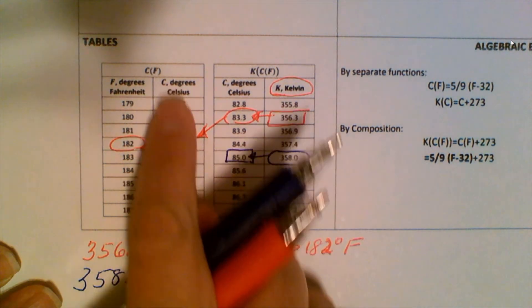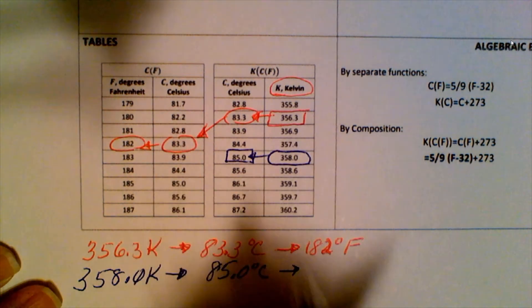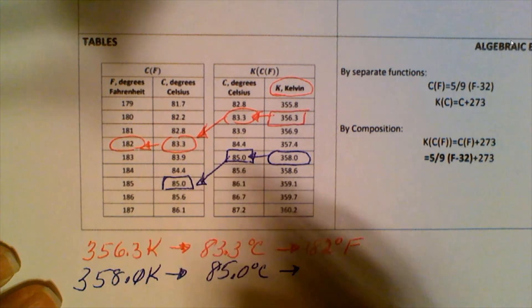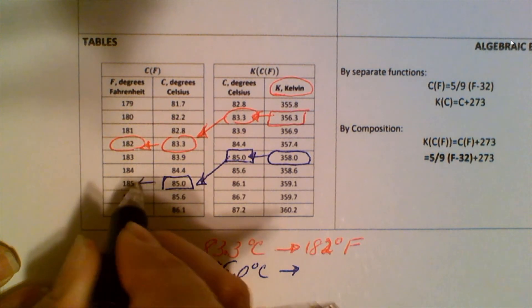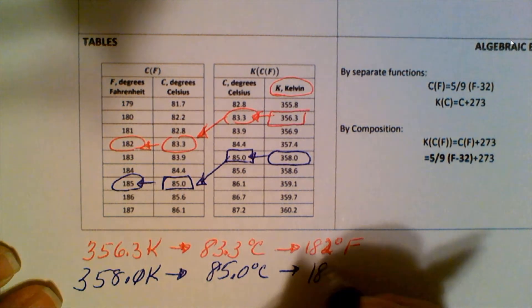We come over to the next table and look for that 85.0. There it is. That gives us 185 degrees Fahrenheit.